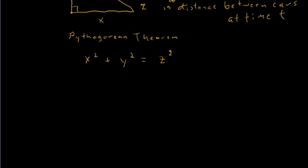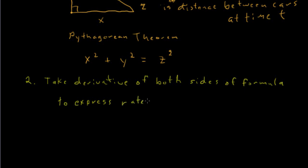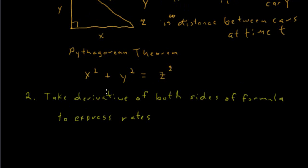What is the second step? The second step is to take the derivative of both sides of the formula to express the rates. In our problem we have miles per hour for both car X and car Y, and we want to know how fast the distance between the cars is increasing. And that's also a rate. So we need to take the derivative with respect to time.